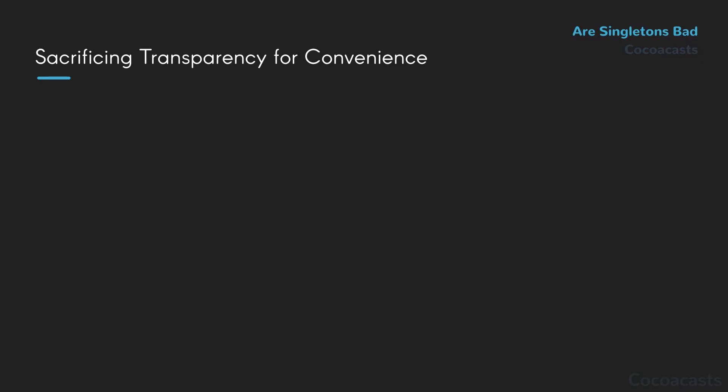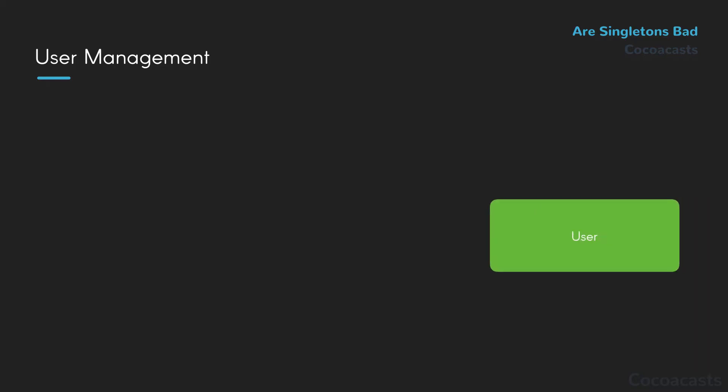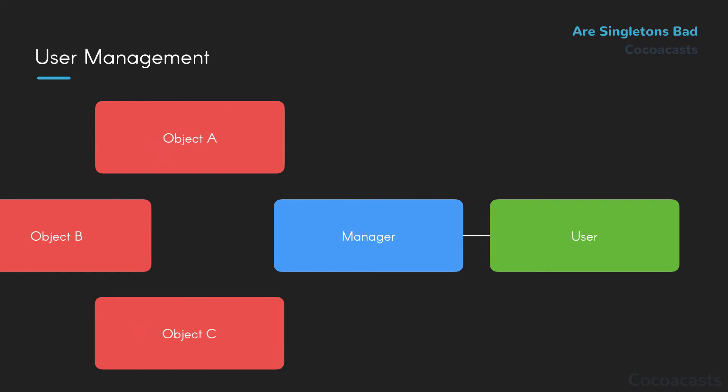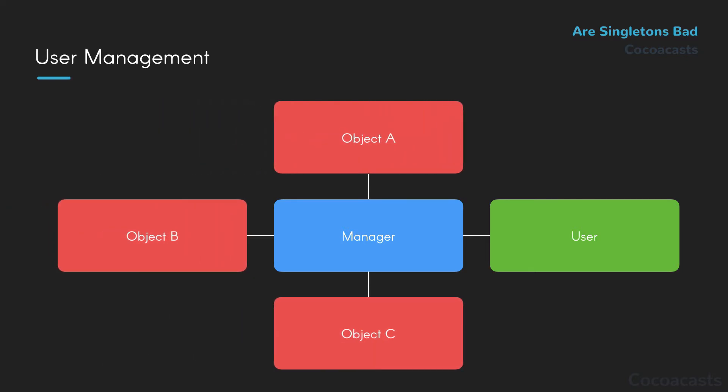A common problem in software projects is user management — a user object needs to be created and managed. There are many solutions to this problem. If you're a fan of the singleton pattern, you might create a singleton manager class that manages the currently signed-in user. Only a single user can be signed in at a time, right? Problem solved? It's true that you can now access the currently signed-in user from anywhere in your project. While this may seem like the best thing since sliced bread, it introduces several problems.